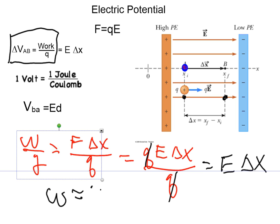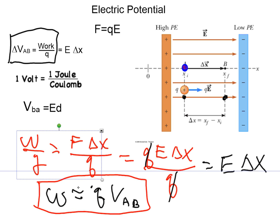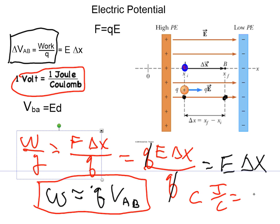The amount of work per coulomb equals the electric field multiplied by the separation of the plates. Therefore, the work that we do is equal to the work per coulomb multiplied by the number of coulombs. So as we move charge from point A to B, the work done equals the charge multiplied by the potential difference between A and B. A volt is a joule per coulomb — you multiply joules per coulomb by coulombs and you get joules.